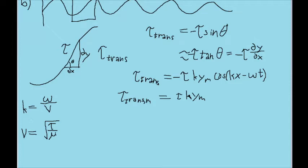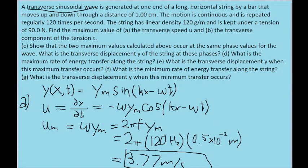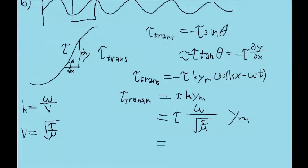The wave number k equals the angular frequency divided by the wave's propagation speed. The propagation speed equals the square root of tension divided by the linear density of the string. We combine these to replace the k term. Plugging in 90 newtons for tau, the same y_sub_m as before, 2*pi times 120 hertz for omega, and the linear density from the problem (converted from grams to kilograms), you get a maximum tension of about 12.4 newtons.